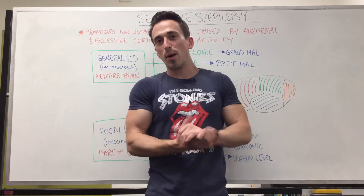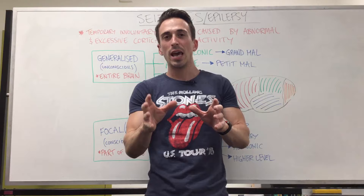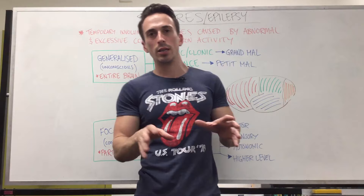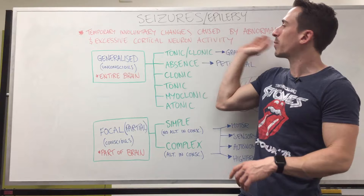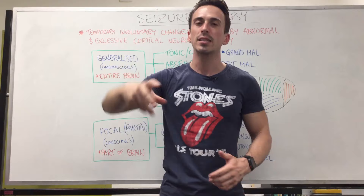Hi everyone, Dr. Mike here. This is the second video on seizures and epilepsy, focusing on the second category of seizures termed focal or partial seizures. In the last video I defined a seizure as a temporary involuntary change caused by abnormal and excessive cortical neuron activity, so we've got neurons firing excessively and abnormally in certain parts of the brain.